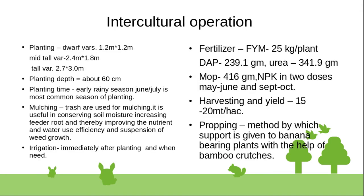Intercultural operations include planting at specific spacings: dwarf varieties at 1.2 x 1.2 meters, mid-tall varieties at 2.4 x 1.8 meters, and tall varieties at 2.7 x 3.0 meters. Planting depth is about 60 cm. The most common planting time is early rainy season, June to July.